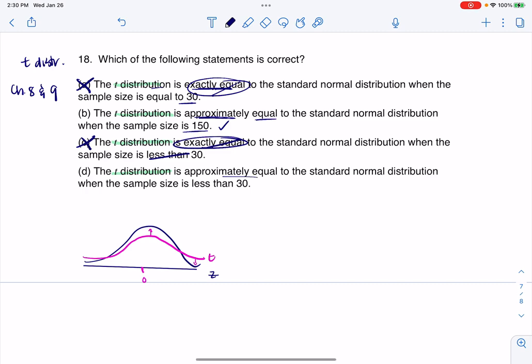The t-distribution is approximately equal to the standard normal when the sample size is less than 30. That's a bad phrase. I don't want that one either. So I'm going to go with b. That is the best answer that I can see inside of those. All right? Thanks.